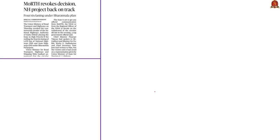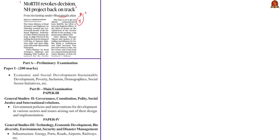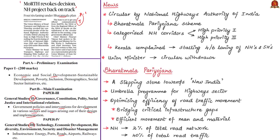The second news article of the day is about the Bharat Mala Pariyojana scheme, titled 'MORTH Revoked Decision, NH Project Back on Track,' appearing on page number 1 in the Thiruvananthapuram edition. It is relevant in prelims under Economic and Social Development, and in mains under Government Policies and Interventions for Development in Various Sectors and under Infrastructure — Roads in particular. This article discusses the circular issued by the National Highways Authority of India, NHAI, under the Bharat Mala Pariyojana scheme.